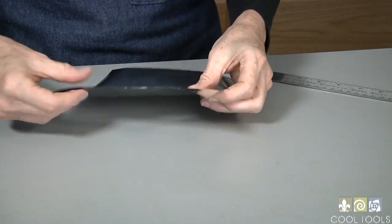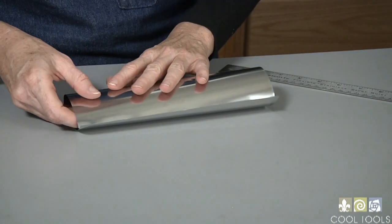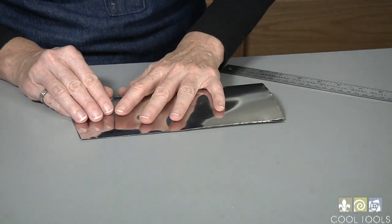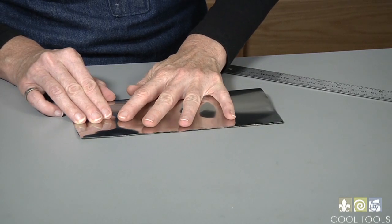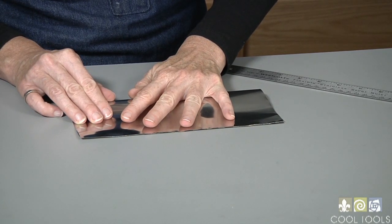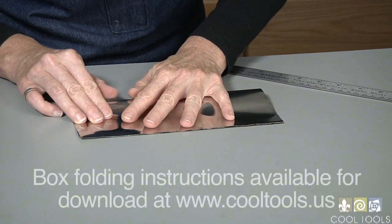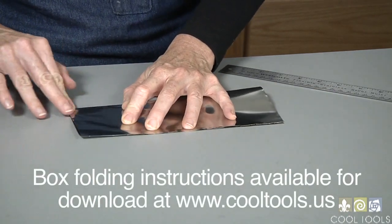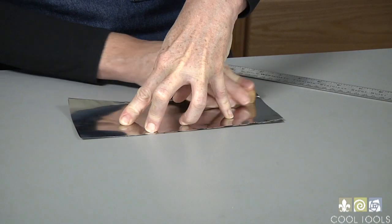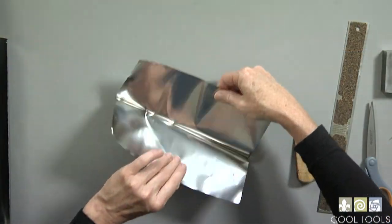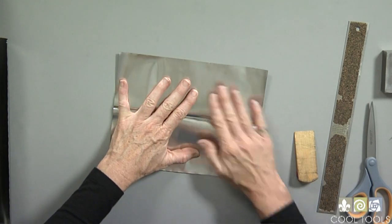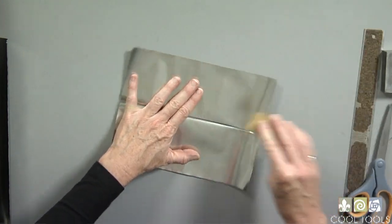Now I'm going to fold it in half the long way and I want to make sure that I line the edges up really well and then press it down to get my crease, and then use my burnishing tool to burnish it down. Now I want to open it up flat and use the burnisher to flatten out that fold.